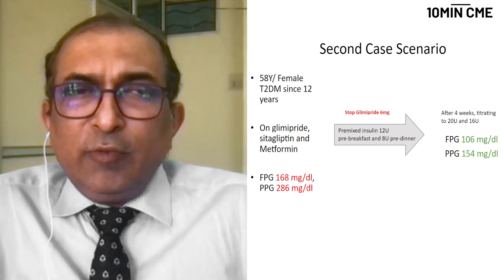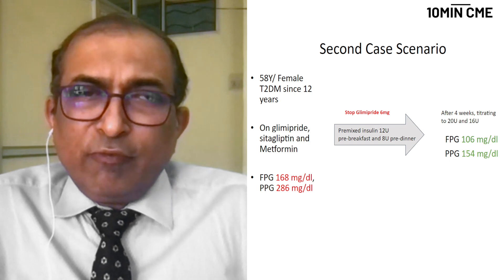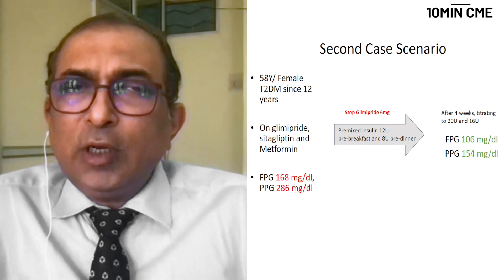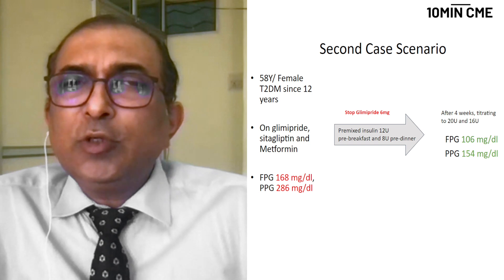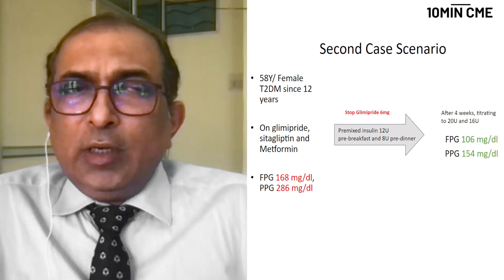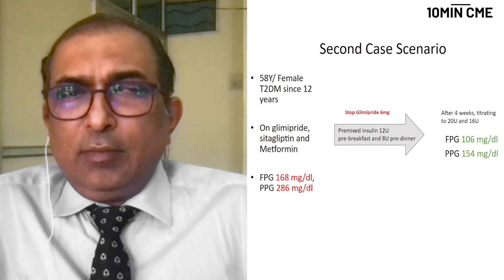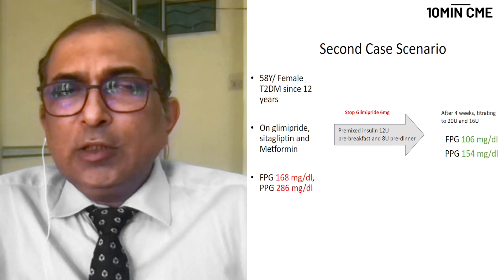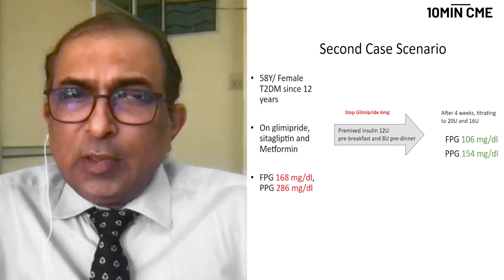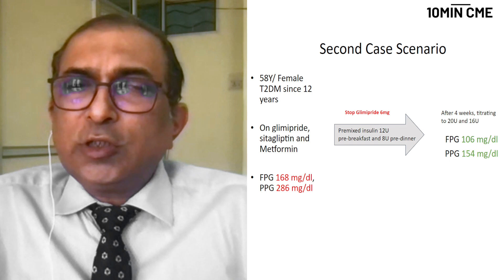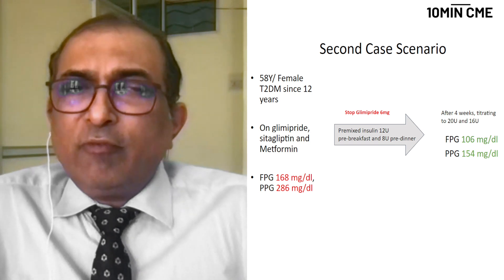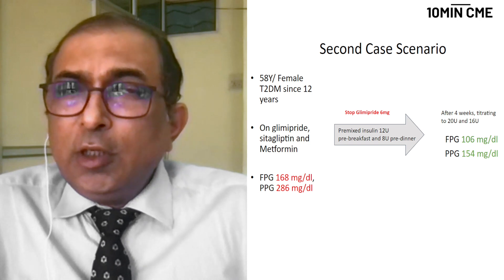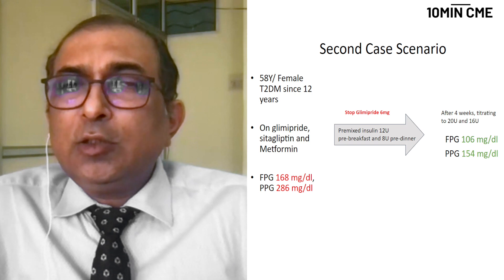To provide convenience and also address both the fasting and post-prandial glucose levels, we started her on premixed insulin at a dose of 12 units before breakfast and 8 units before dinner. We stopped the glimepride while continuing the metformin and sitagliptin. She was given advice on titrating the dose every 3 to 4 days. She came back after 4 weeks with a fasting glucose of 106 mg/dL and a post-prandial glucose level of 154. The insulin dose she was using at that time was 20 units in the morning and 16 units in the evening.